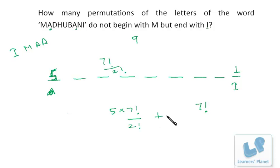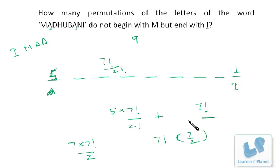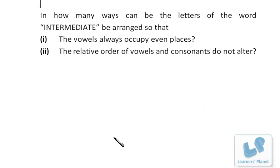Combining both cases: if A is at the first place we get 7! arrangements; if neither A is at the first place we get 5 × 7!/2!. Taking 7! as common gives 7!(5/2 + 1) = 7!(7/2) = 7 × 7!/2 as our final answer.